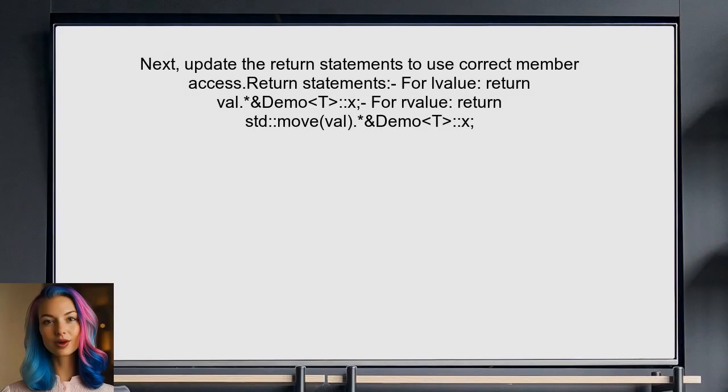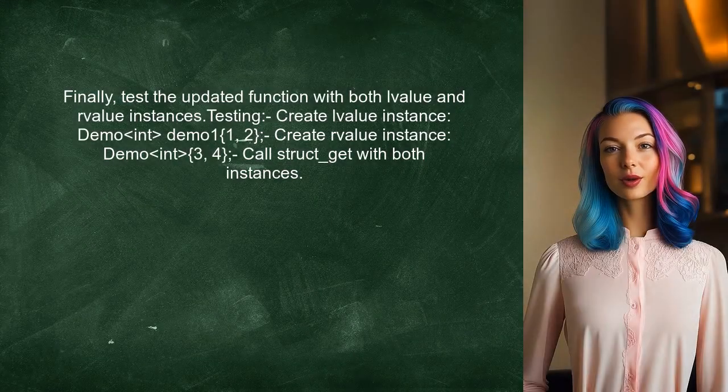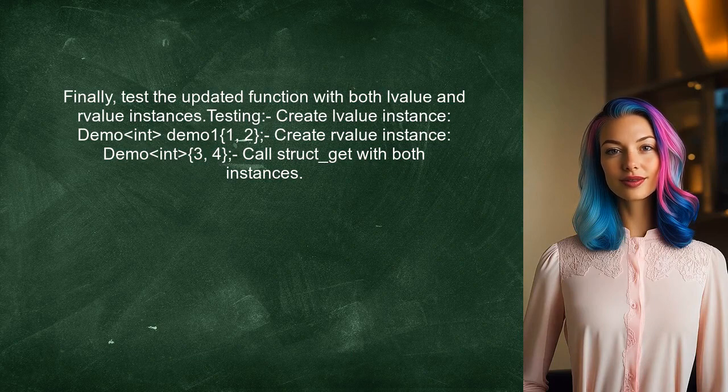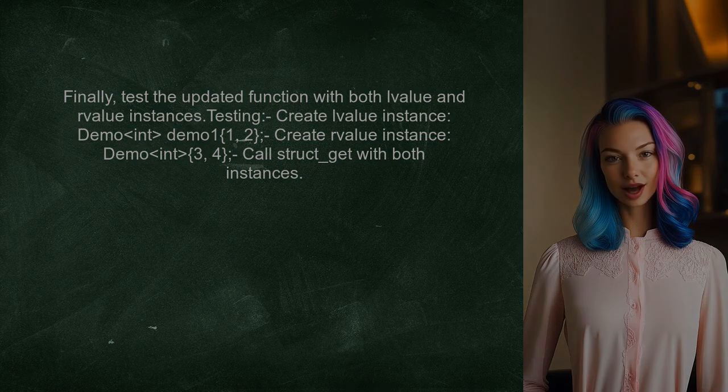Next, we will update the return statements to use the correct member access. This will ensure that we return an L value reference when the input is an L value and an R value reference when the input is an R value. Finally, the user should test the updated function with both L value and R value instances of the demo struct to confirm that it behaves as expected.